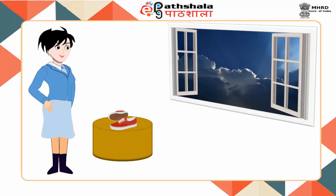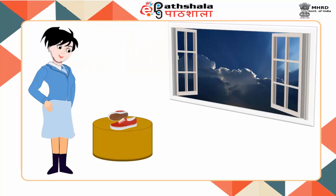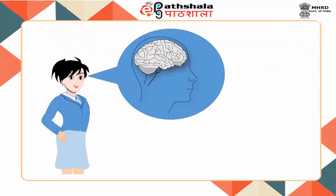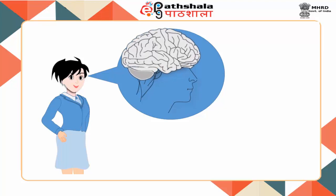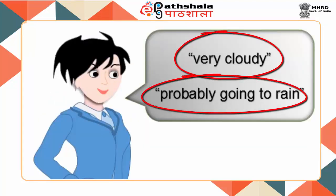Fuzzy system — Geeta wants to go to school. She is looking out of her window. If it is very cloudy or probably going to rain, she has to decide if she can wear her sports shoes today. Since Geeta is a human being, the human brain can understand the terms 'very cloudy' and 'most probably'.